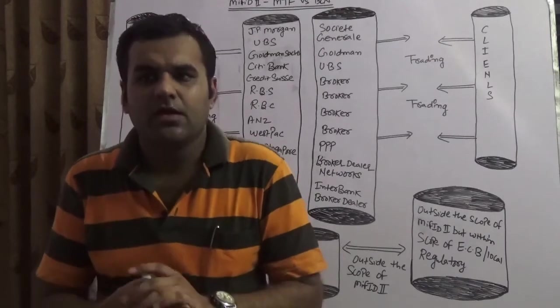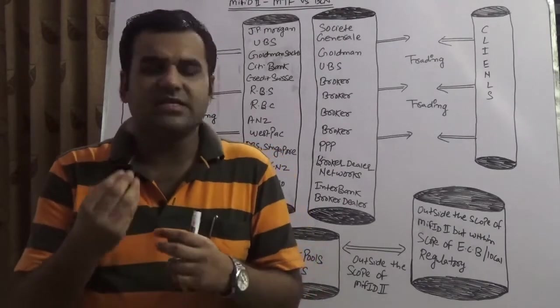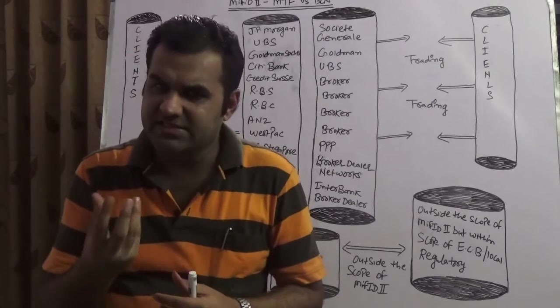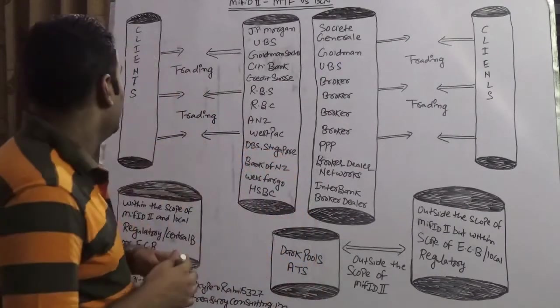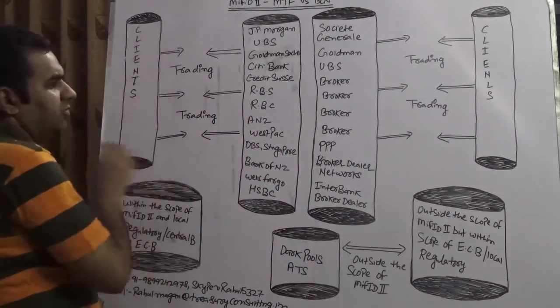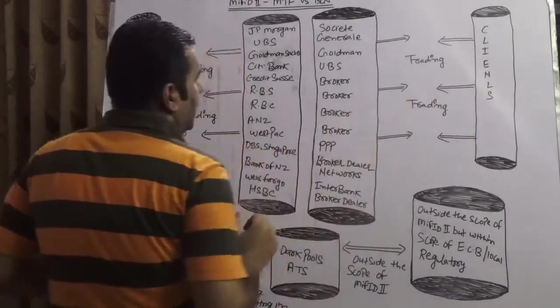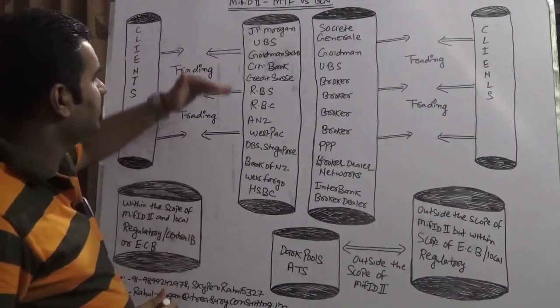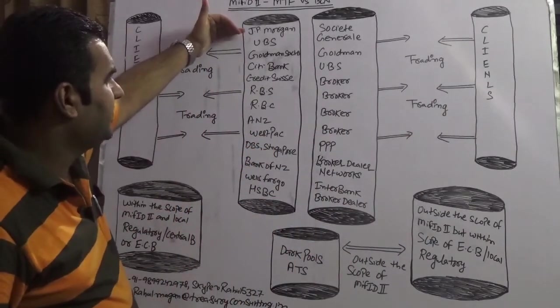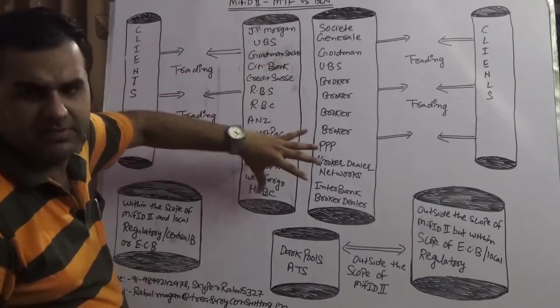From the MIFID perspective, things are of a complicated nature. Let's take a small example. You would have a client here and you would have a client there. All these clients are connecting with one which is known as MTF, which is a multilateral trading facility.